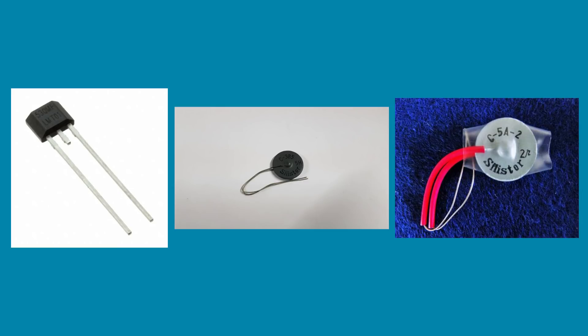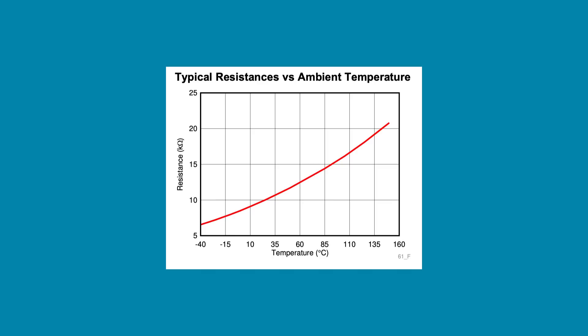There are three main types of PTC thermistors, each with a different makeup, and each experiencing a different non-linear response to temperature changes. The first but less common type are silisters. Due to their doped silicon makeup, silisters have a near-linear temperature resistance curve, which is determined by the amount of doping used.